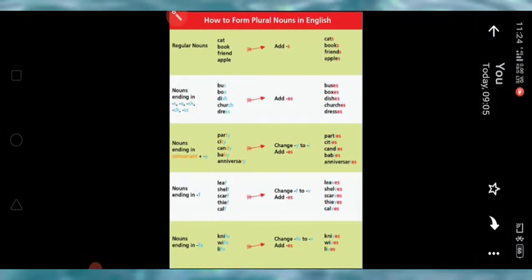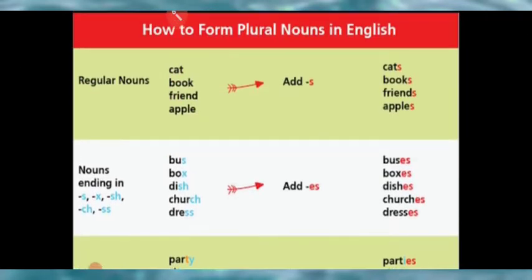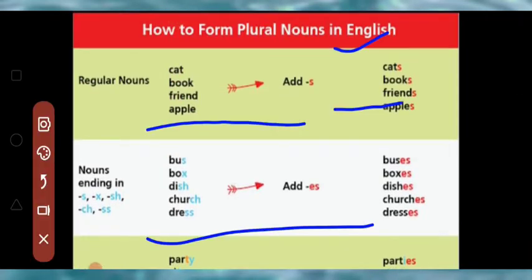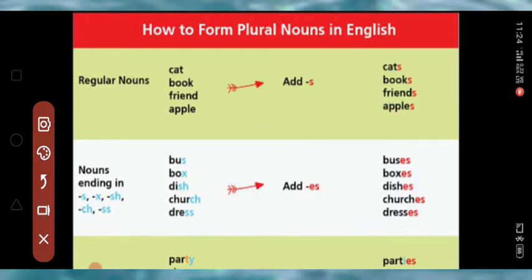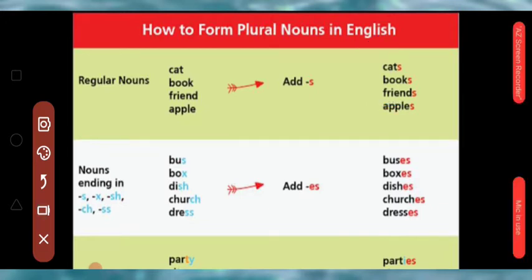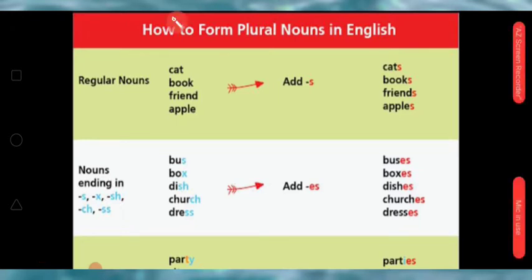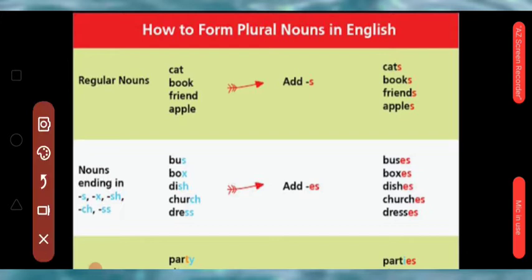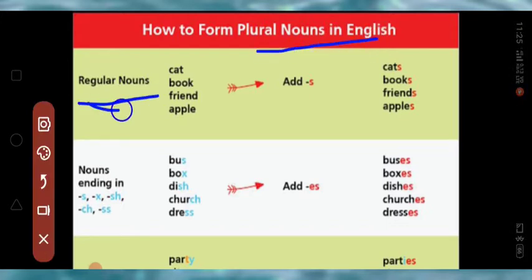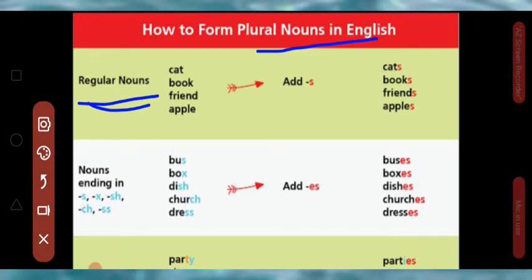Here we have some rules on how to form plural nouns in English. There are some rules you have to follow. The very first rule is for regular nouns — when words are simply regular nouns, we add S to make them plural.